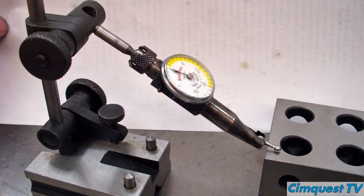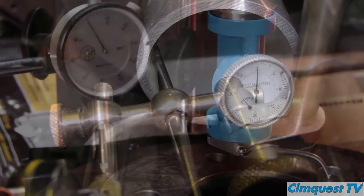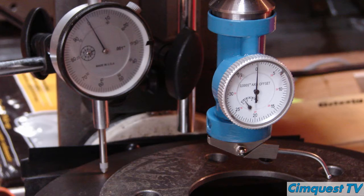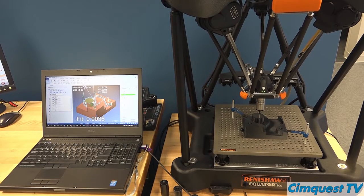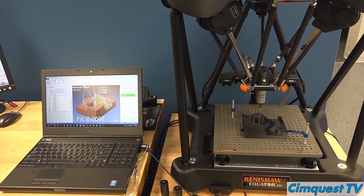There are various types of dial indicators and other manual gauges that can be used to inspect the part and determine if it's within tolerance. However, inspecting surface profile tolerances can be quite challenging when you're measuring freeform surfaces.